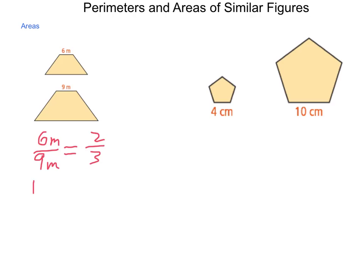So for perimeter, it would be a ratio of 2 to 3. For area, we'd be looking at a ratio of 4 to 9 because we square those.